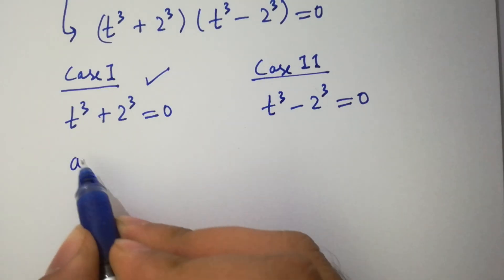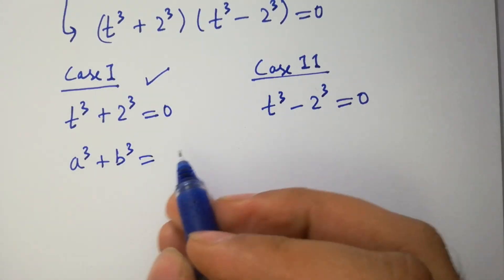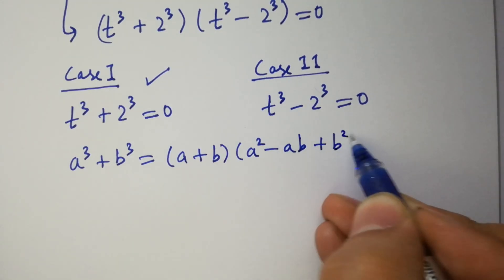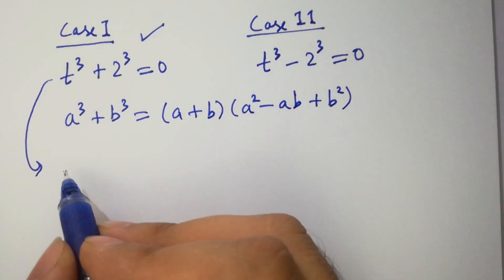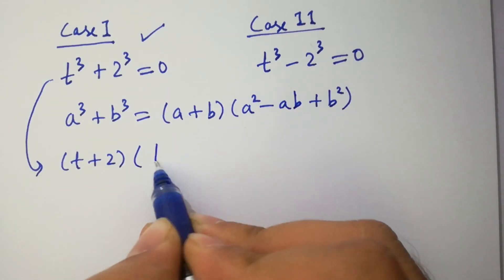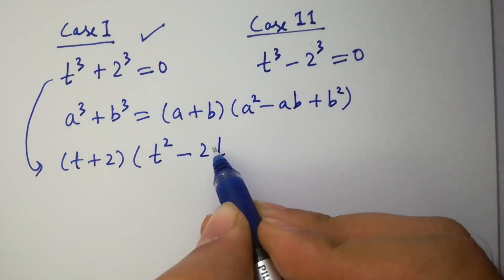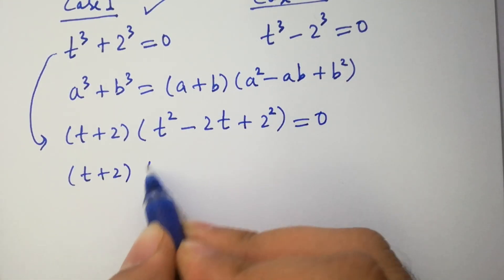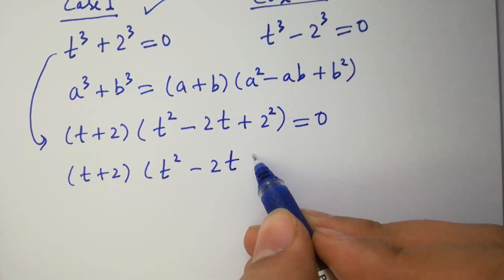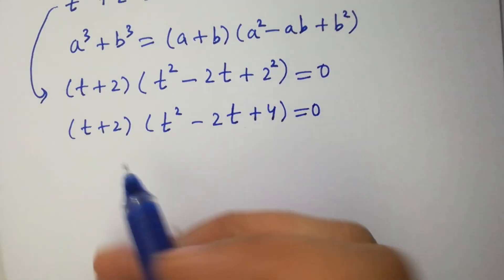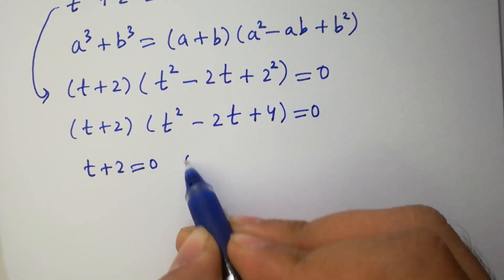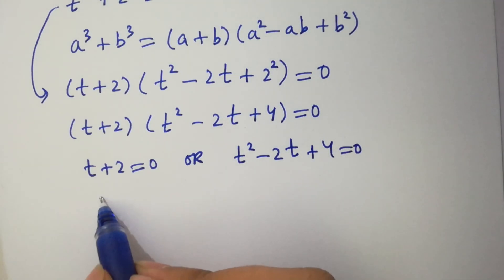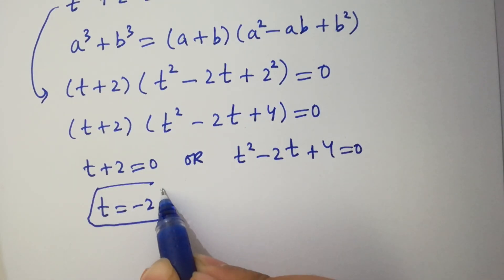Since a³ + b³ = (a + b)(a² − ab + b²), it will be (t + 2)(t² − 2t + 4) equal to 0. Either t + 2 = 0, giving t = −2, which is our first real solution, or t² − 2t + 4 = 0.